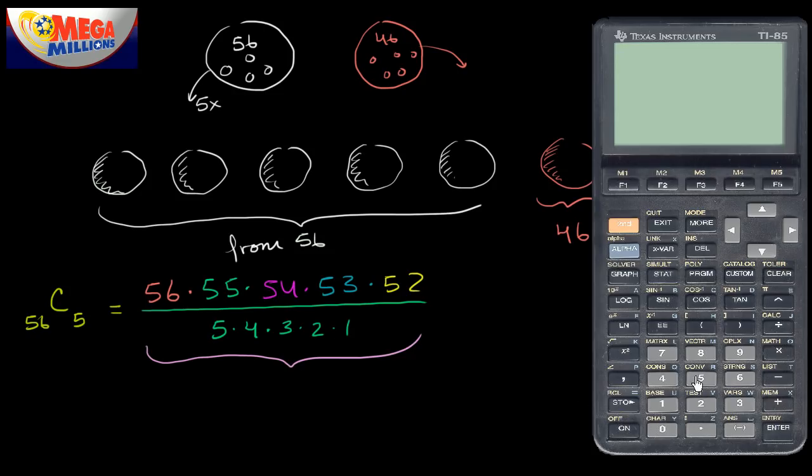So just the white balls, we have 56 times 55 times 54 times 53 times 52. And we're going to divide that by 5 times 4 times 3 times 2. We don't have to multiply by 1, but I'll just do that just to show what we're doing. And then that gives us about 3.8 million.